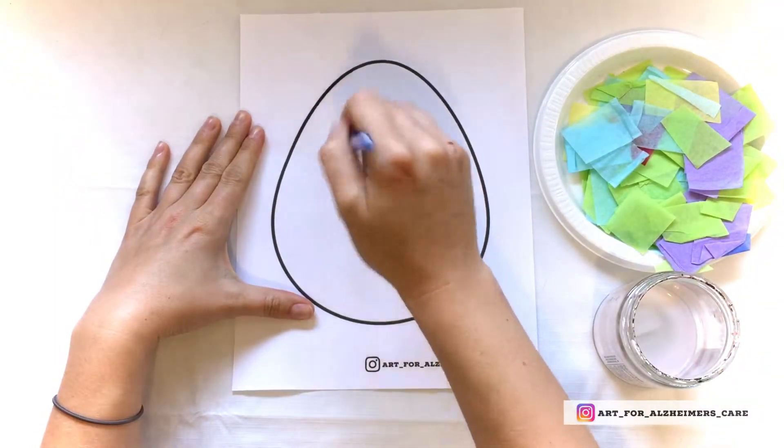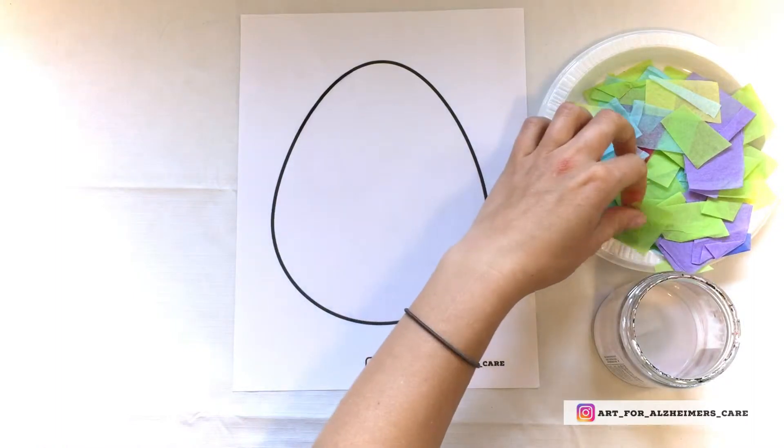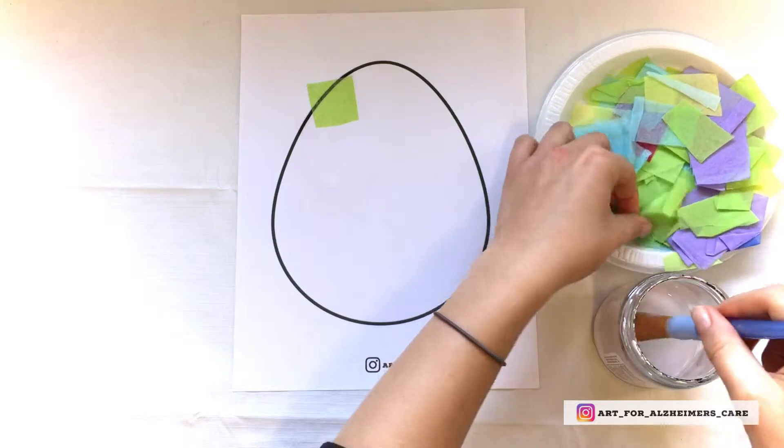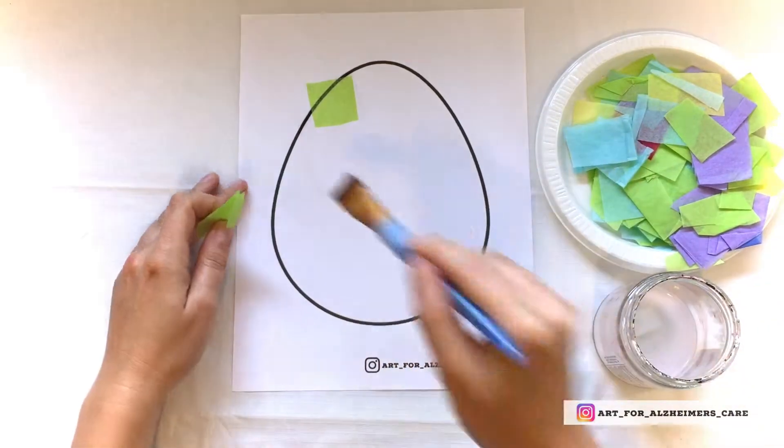So to do this project you just brush on some of the glue and then adhere a piece of tissue paper on top.